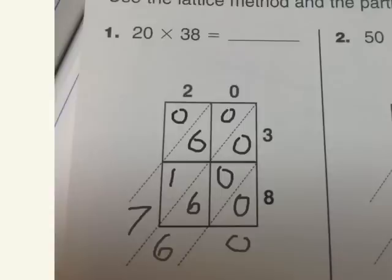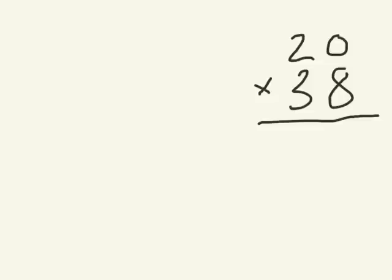Now next we need to do the partial products algorithm which we've also never done with two digits times two digits. So let's try that. So I've rewritten this here so I have a little bit more space. And we're still going to do the tens place first, so I'm going to go 30 twenties first.